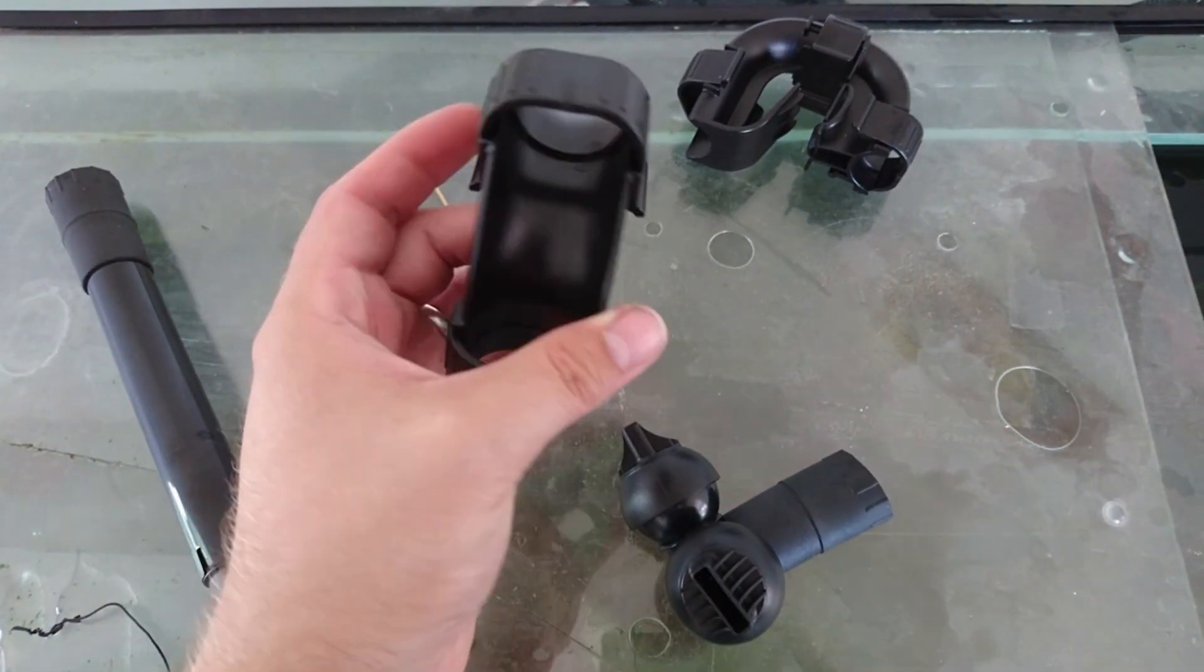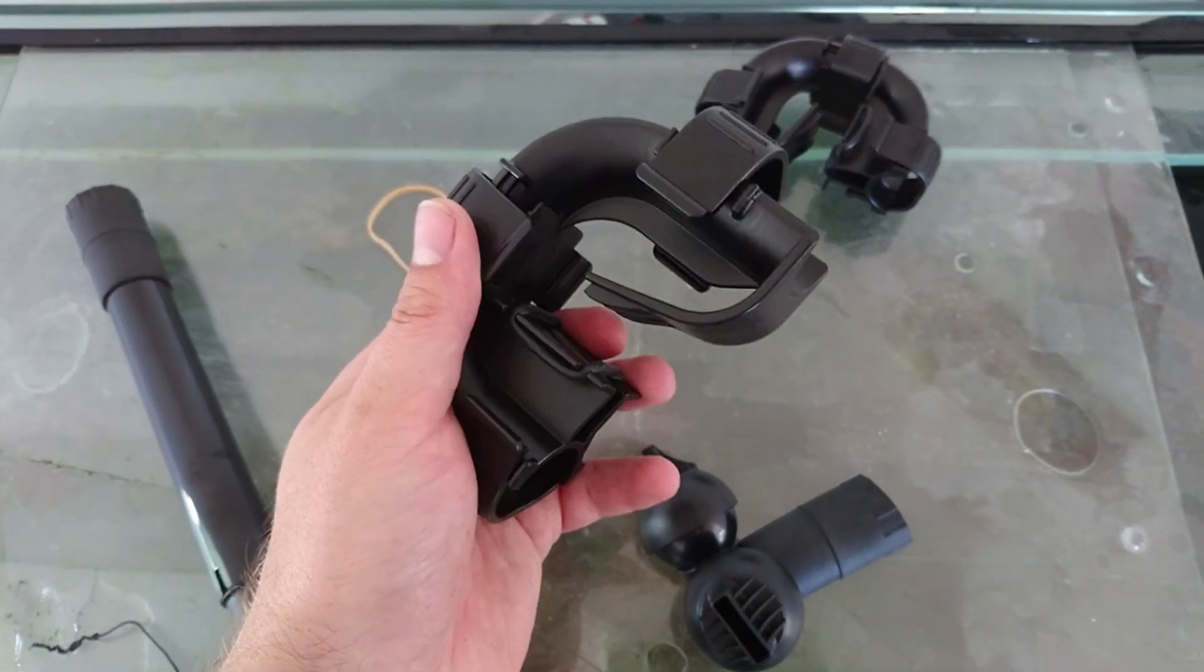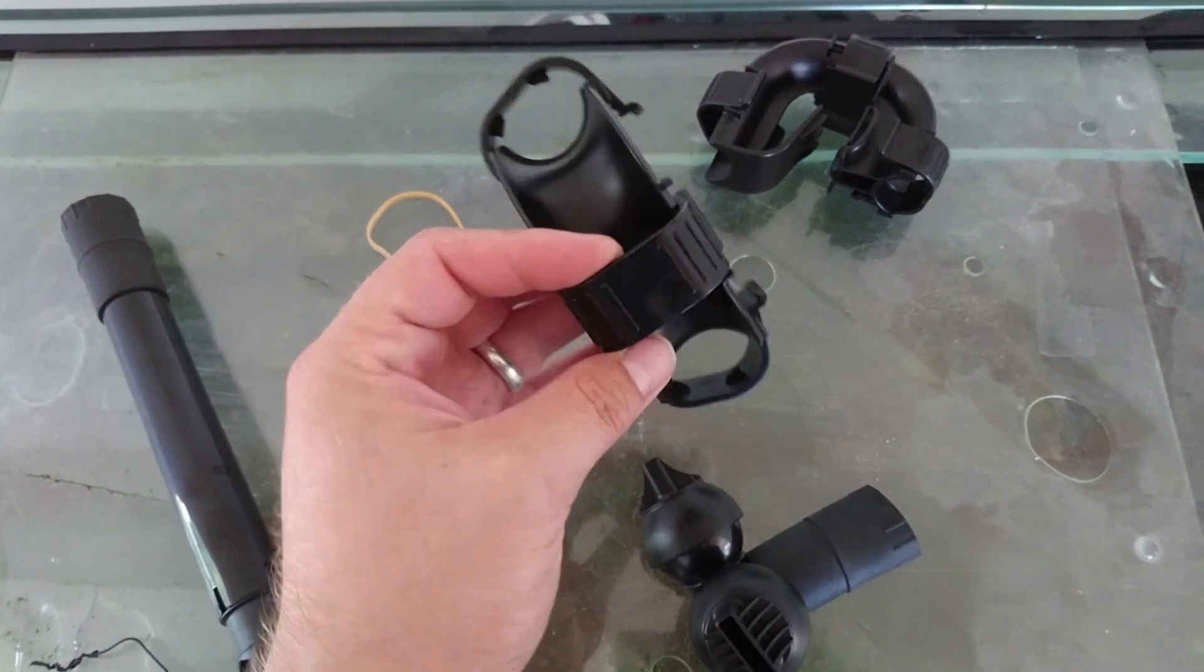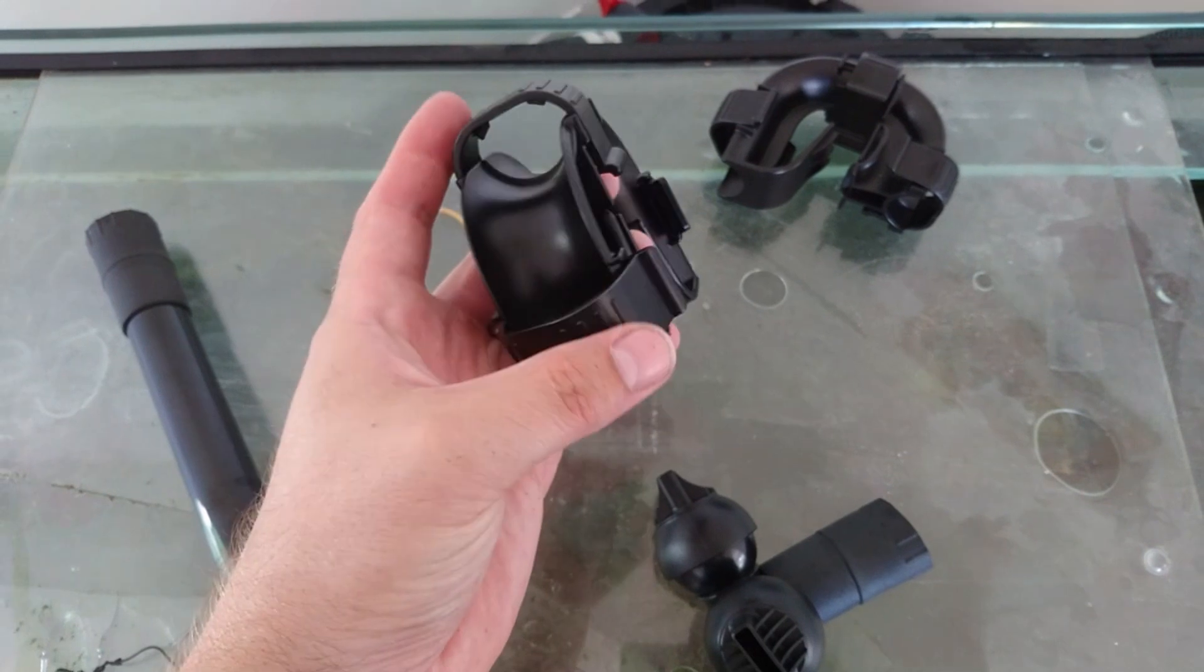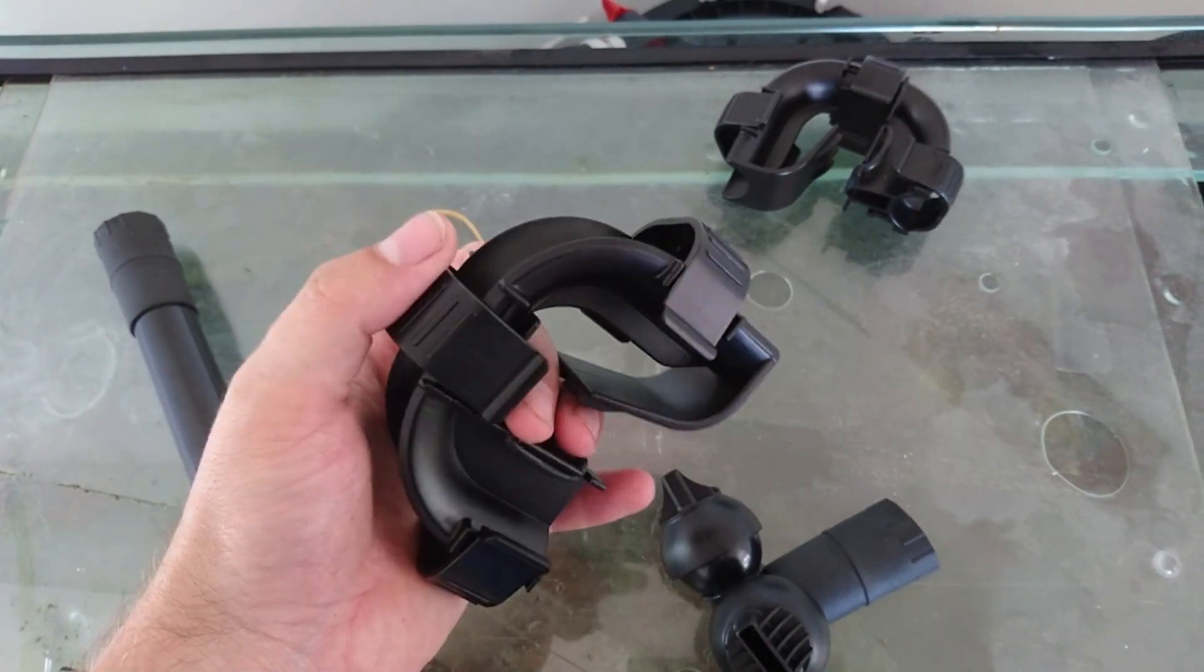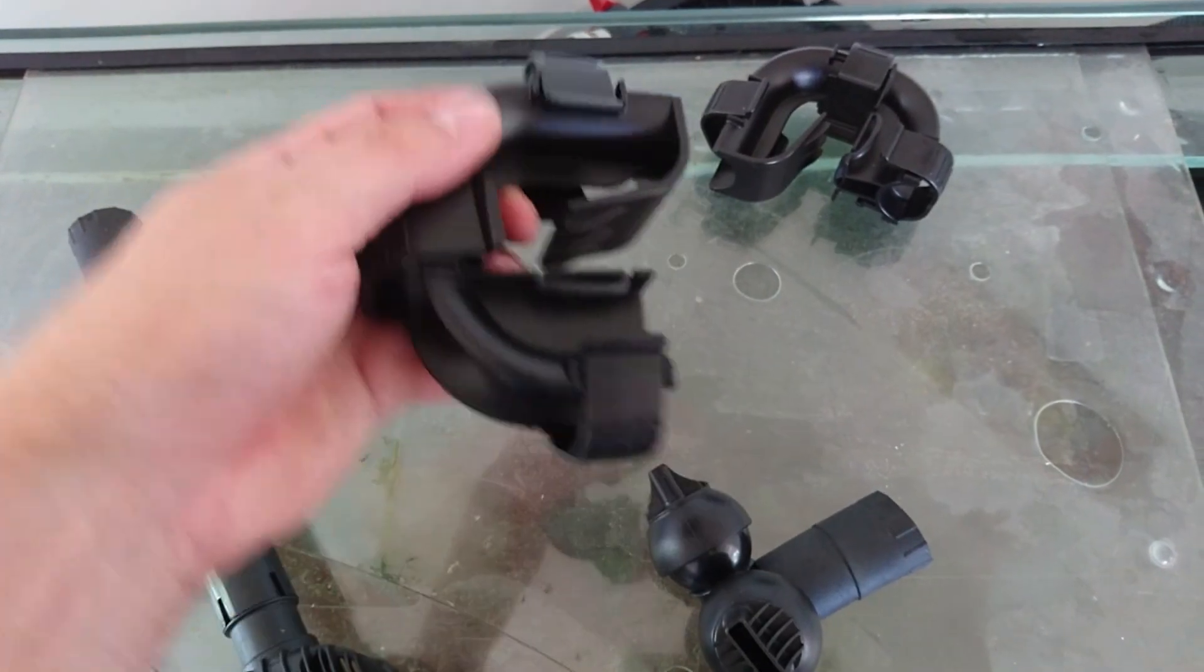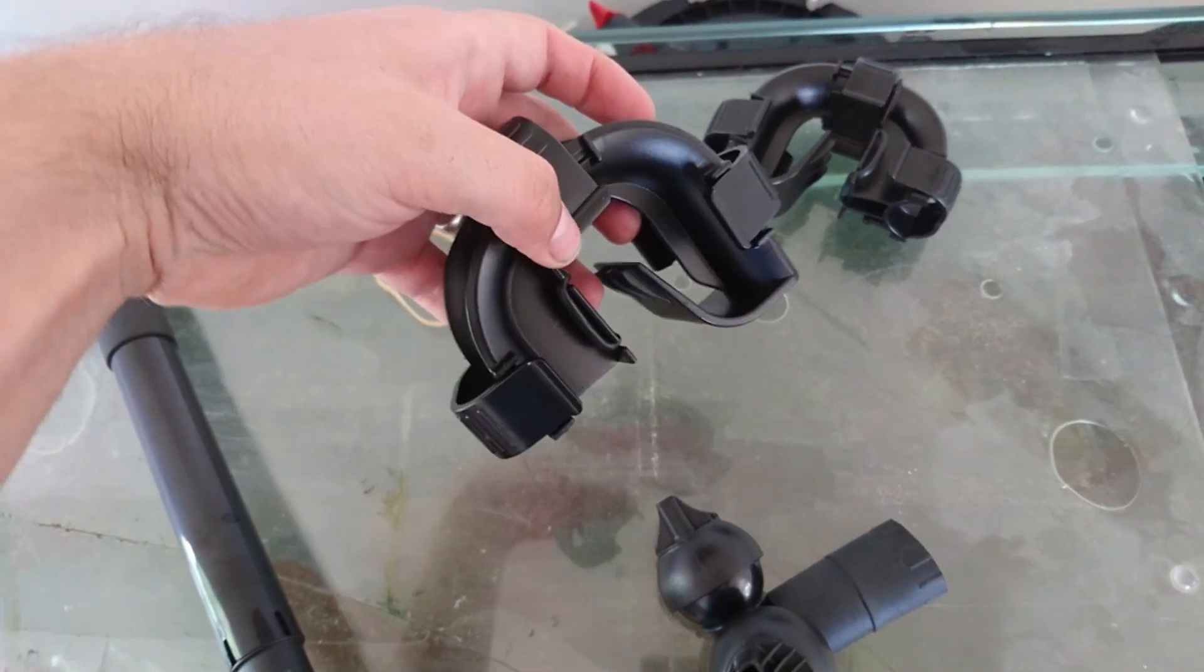The tank rim connectors for holding your pipe work are optional. I won't be using them. However they are great for holding your pipe in place. To do that you simply take off these clips, slot your pipe work into it, put the clips back on, and then that goes over the edge of the tank.